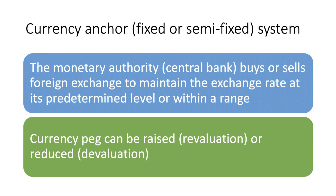With a fixed exchange rate system, you are anchoring your currency either in a fully fixed way or a semi-fixed way. The central bank, otherwise known as the monetary authority, buys and sells currencies to maintain their exchange rate at the predetermined fixed level or within the range. The currency peg can be increased — that's called the revaluation of the exchange rate — or it can be reduced, which is called the devaluation of a fixed exchange rate.